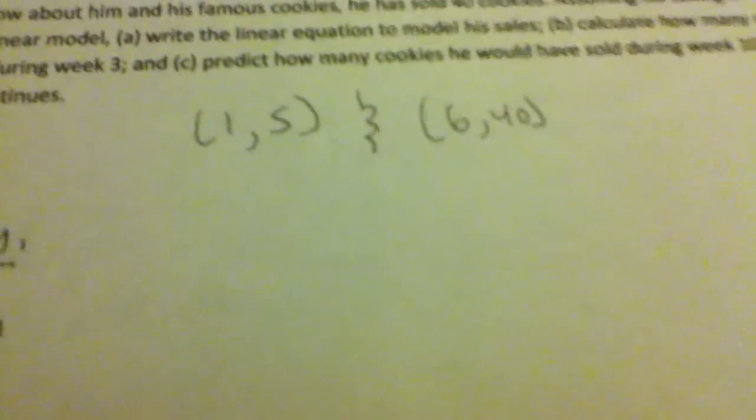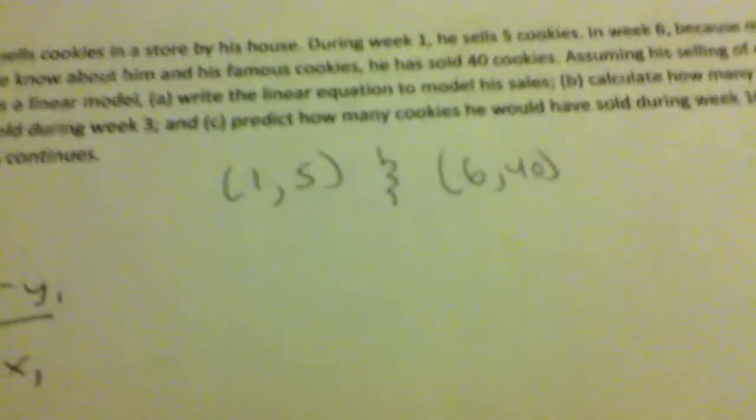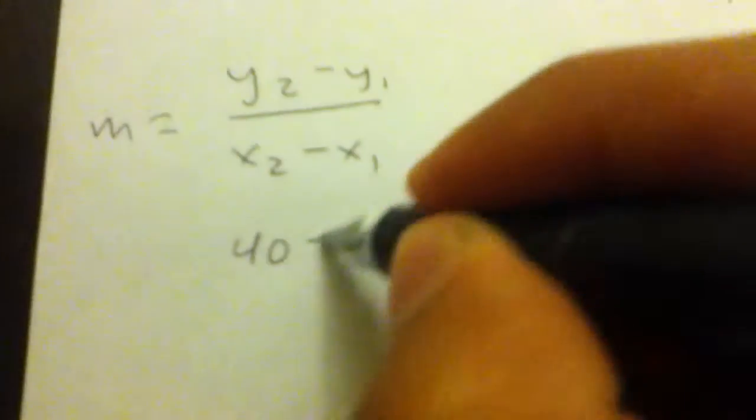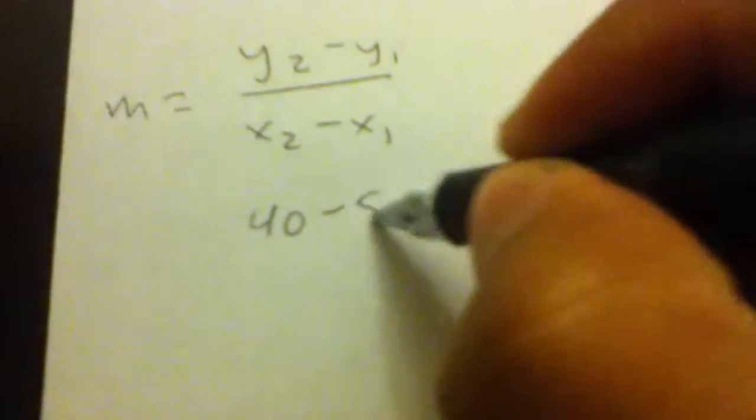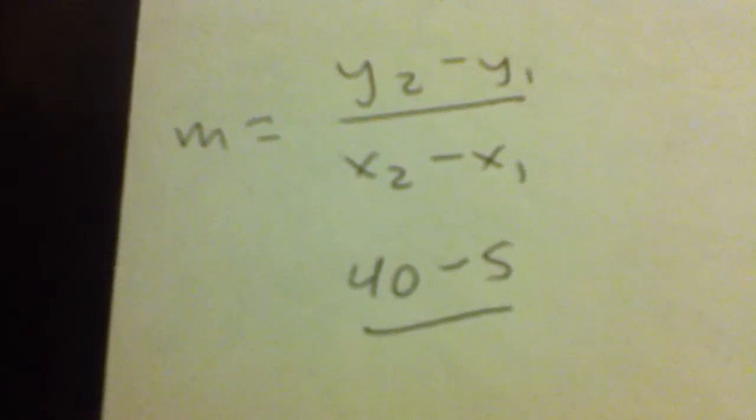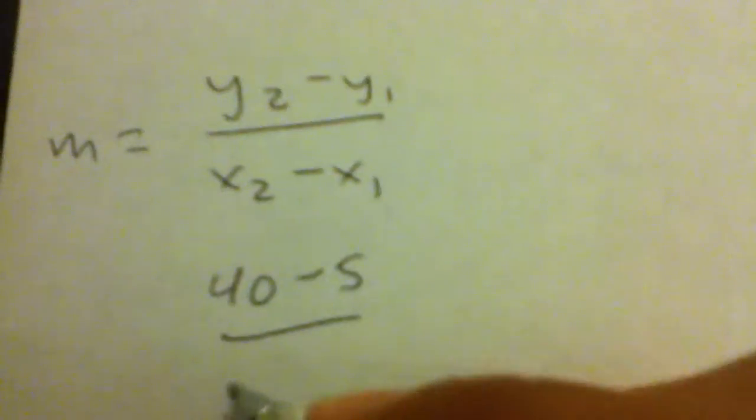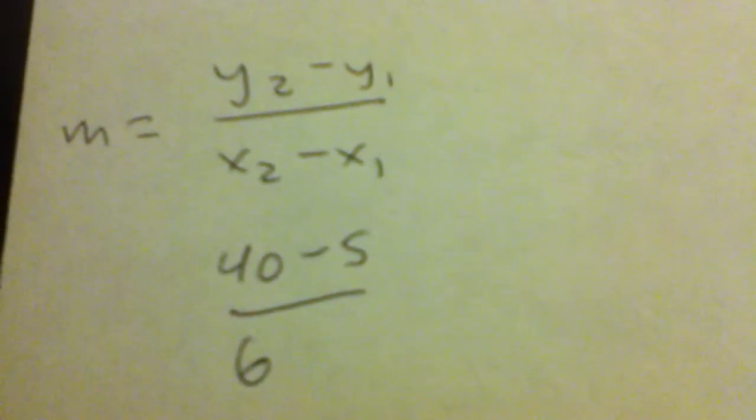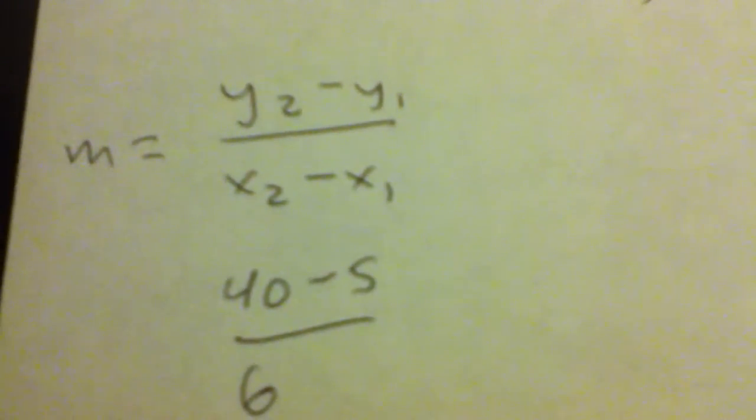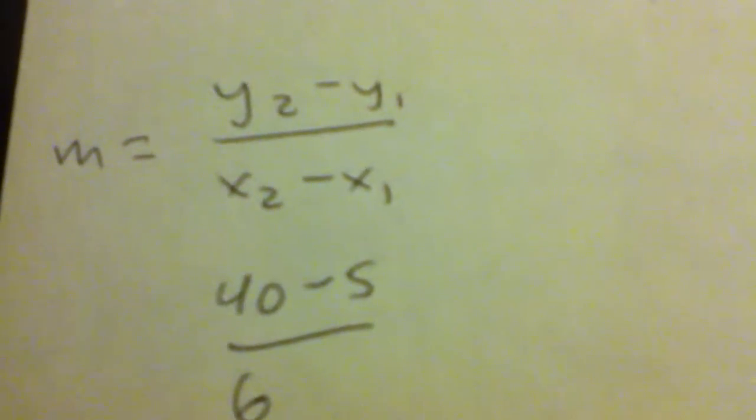These coordinates will help us find the slope. Now we plug them in. y2, which is 40, minus y1, which is 5, over x2, which is 6, minus x1, which is 1.